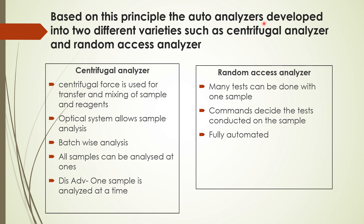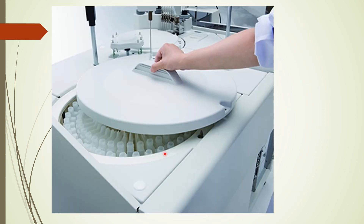Based on the discrete processing principle, auto-analyzers have developed into two varieties: centrifugal analyzers and random access analyzers. In the centrifugal analyzer, centrifugal force is used for transfer and mixing of samples and reagents, with an optical system allowing sample analysis. Batch-wise analysis can be done and all samples analyzed at once, but the disadvantage is only one sample is analyzed at a time for one variable. In the random access analyzer, many tests can be done with one sample, the commands decide the test conducted, and it is fully automated.